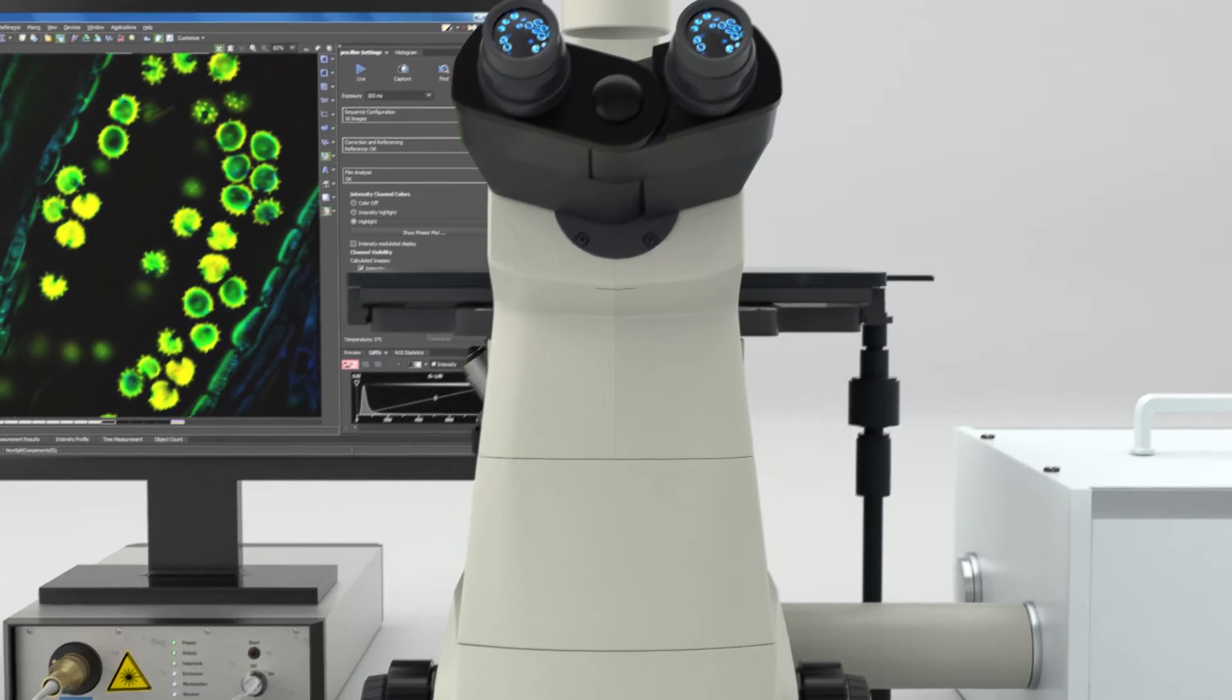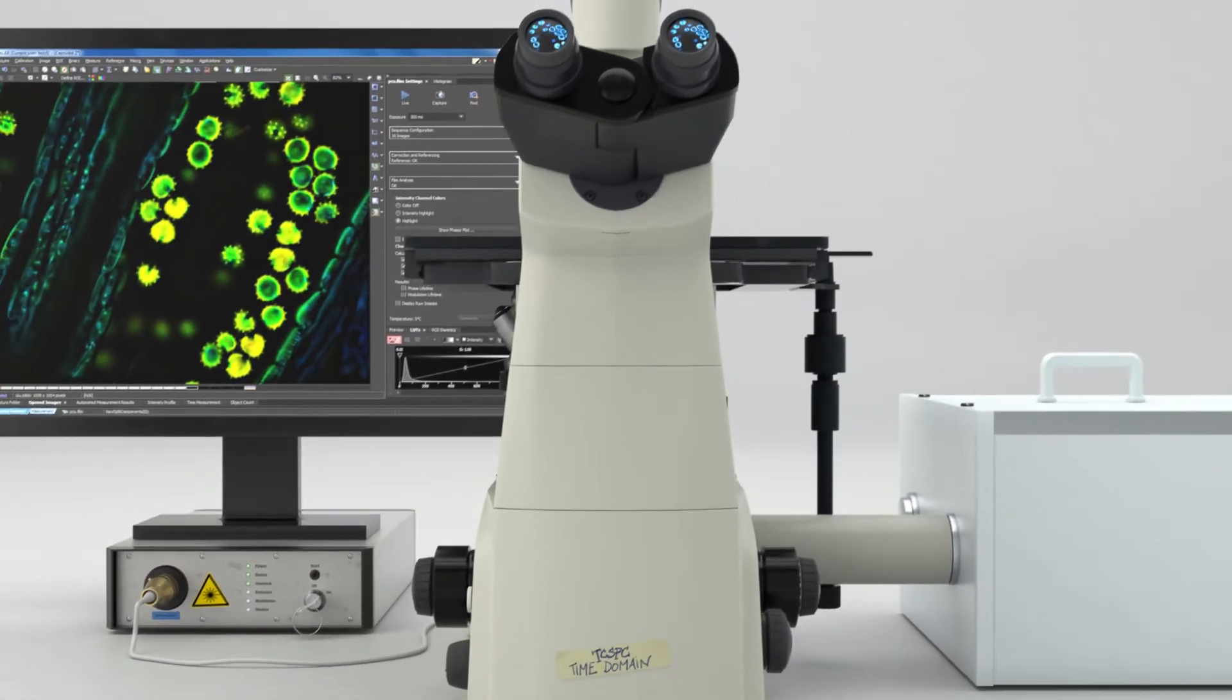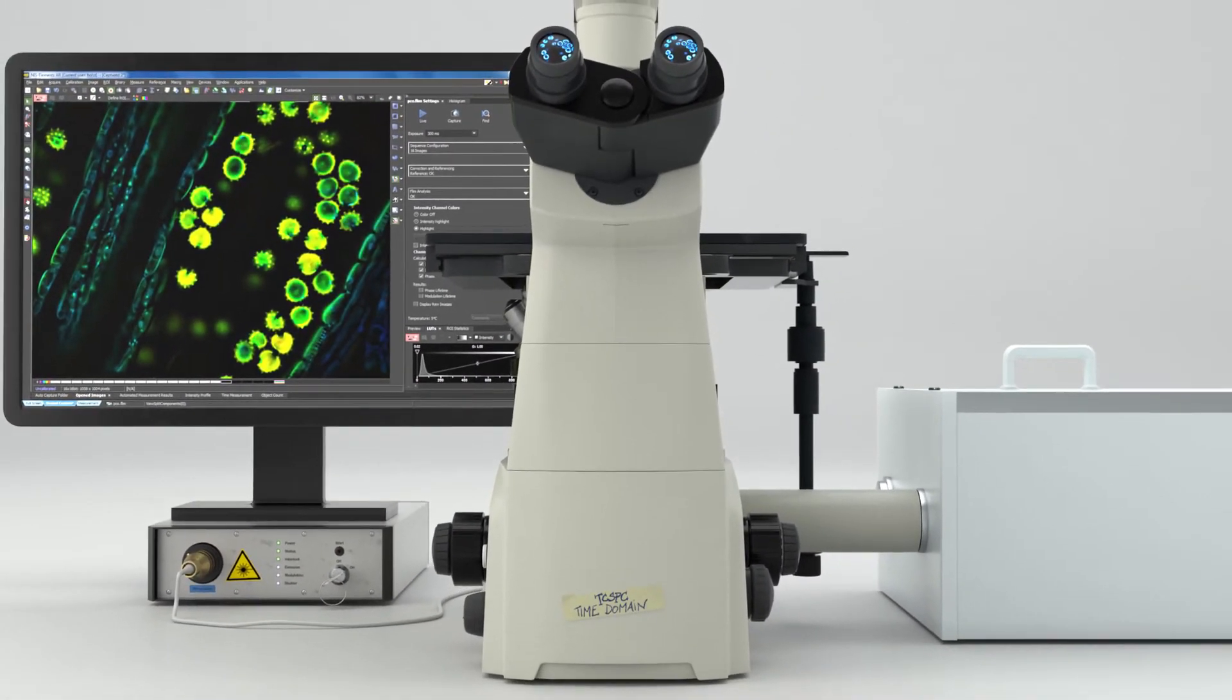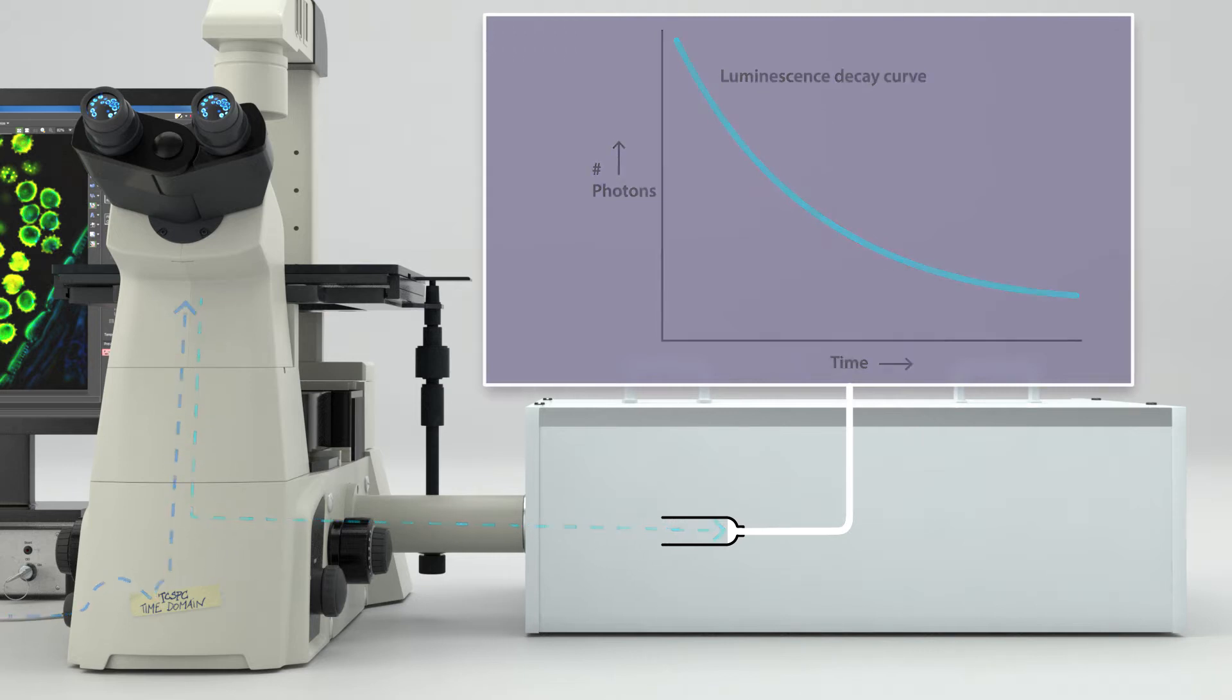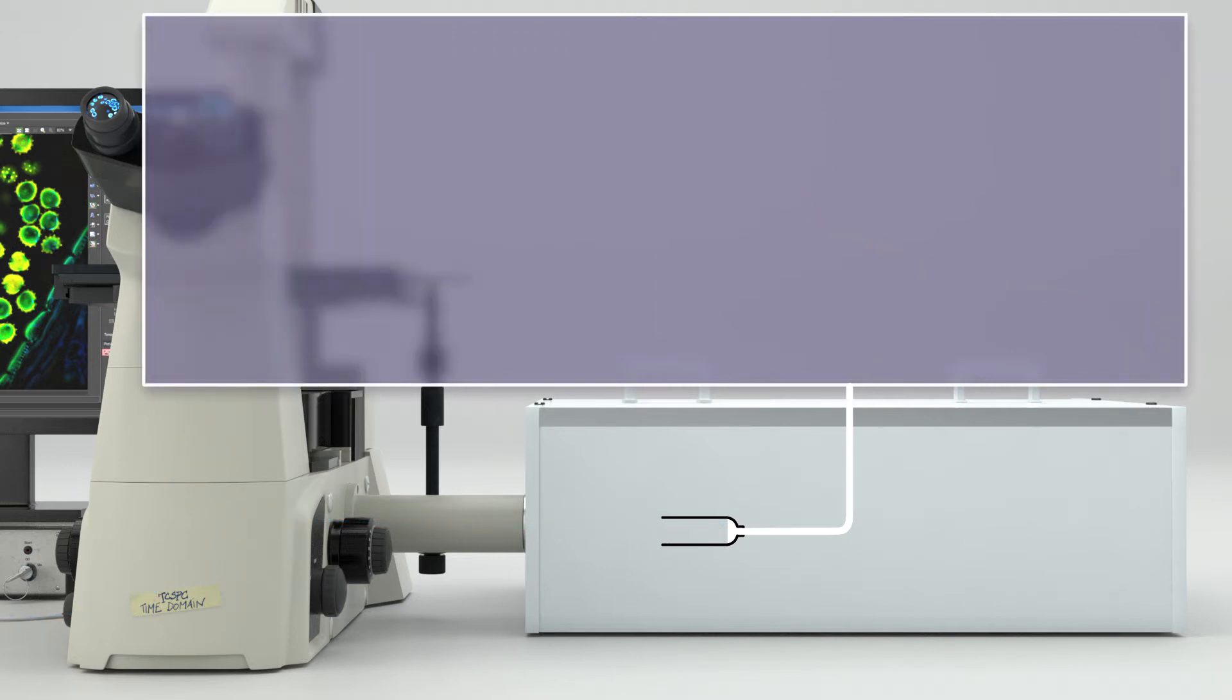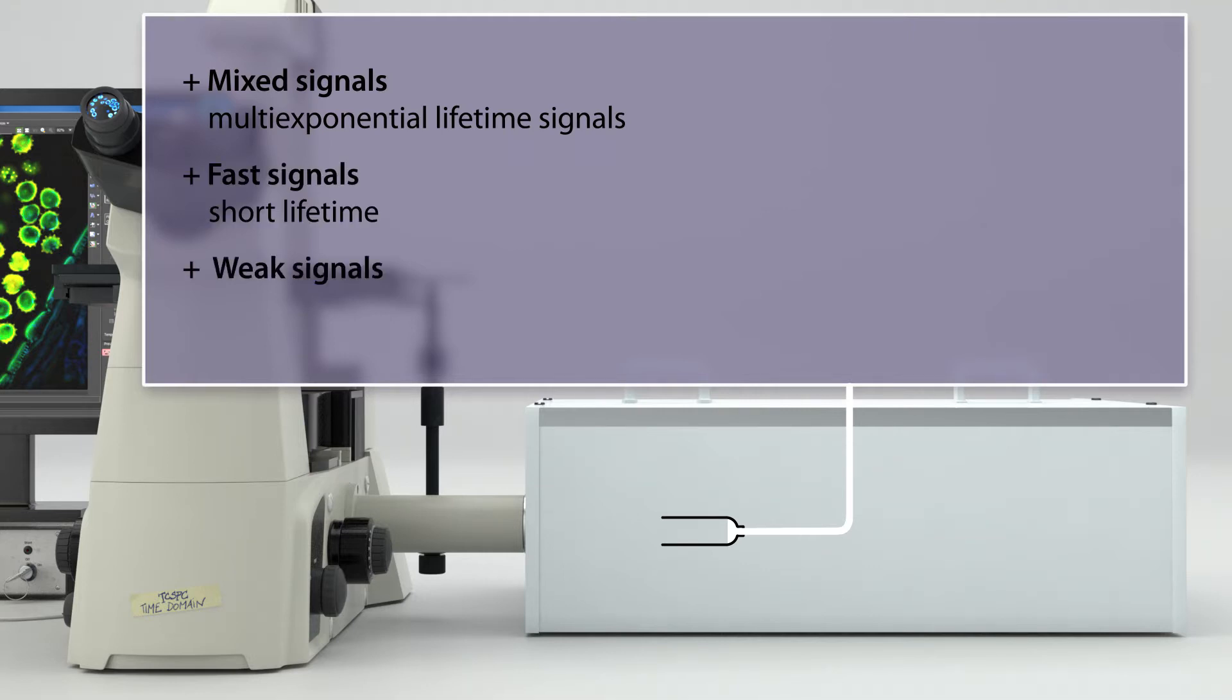Established examples of time domain equipment are point scanning TCSPC systems. These point scanners count the emission photons in time, allowing you to reconstruct a luminescence decay curve. This makes TCSPC suited for mixed, fast, and weak emission signals. On the downside, the recording speed of the process is slow due to its point scanning nature.